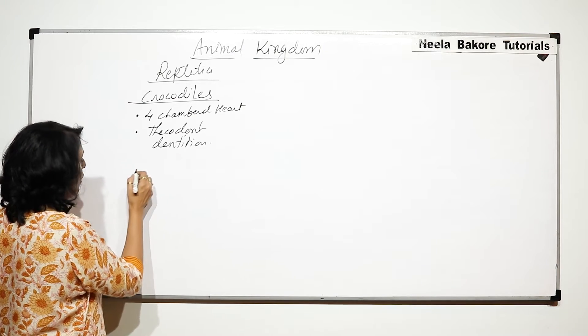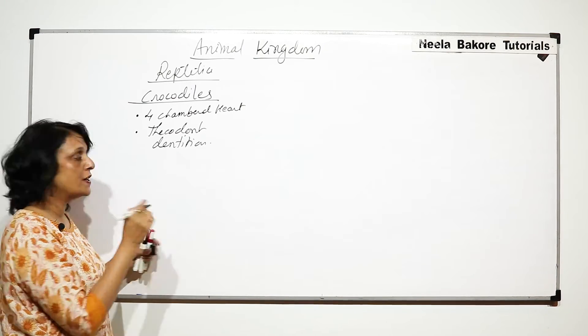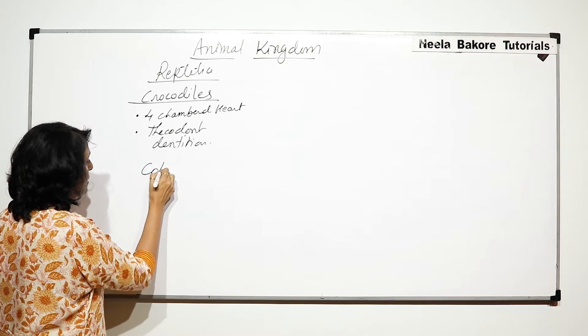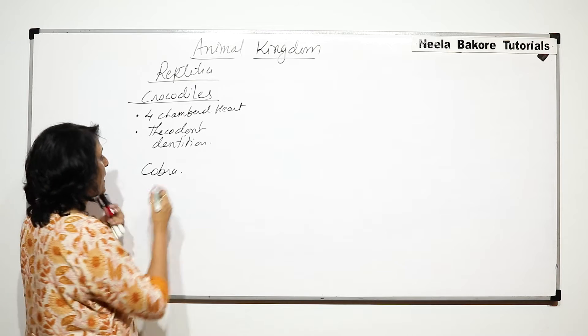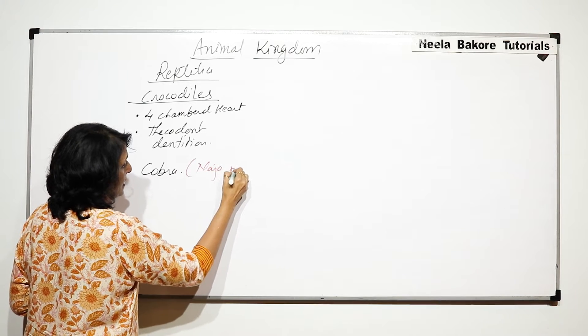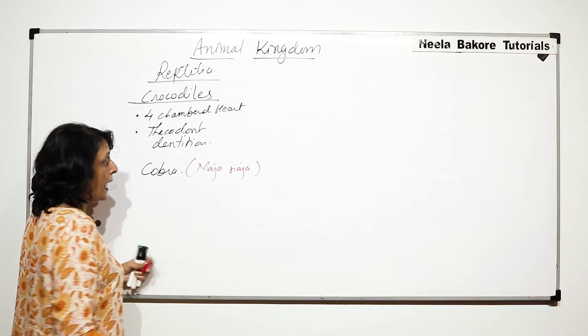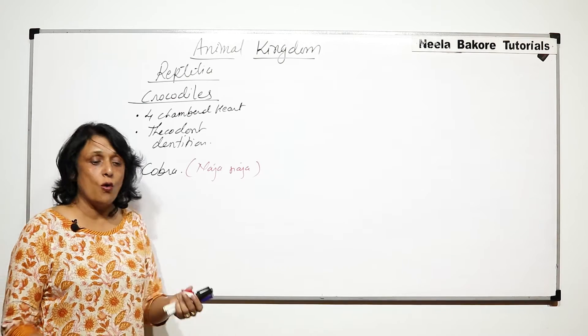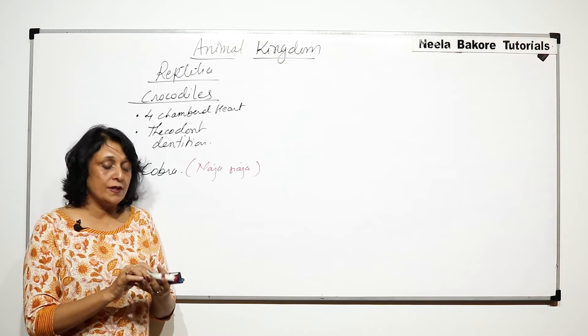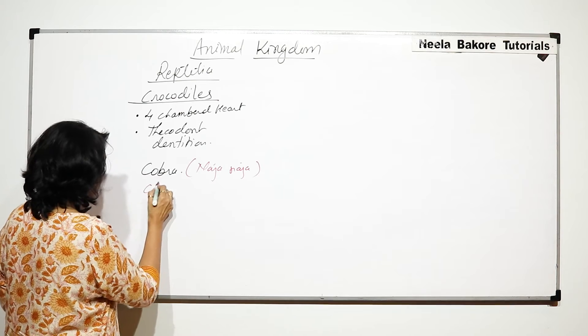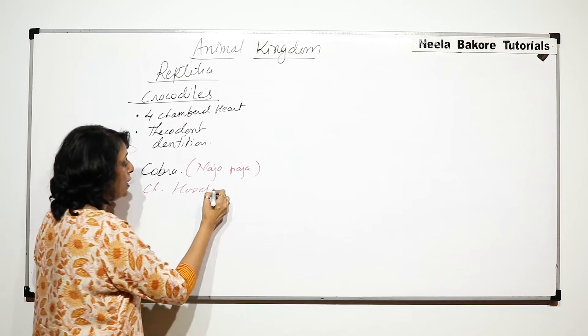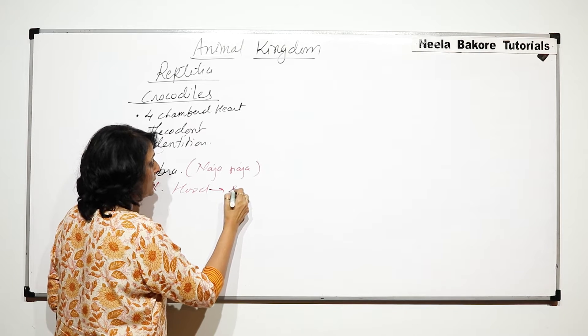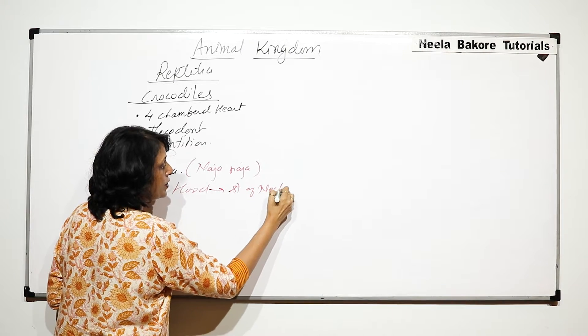The next example is of snakes. The first snake we're talking of is cobra. The scientific name of cobra is Naja naja, and cobra is known for its characteristic hood. This hood is formed by stretching of the neck region.